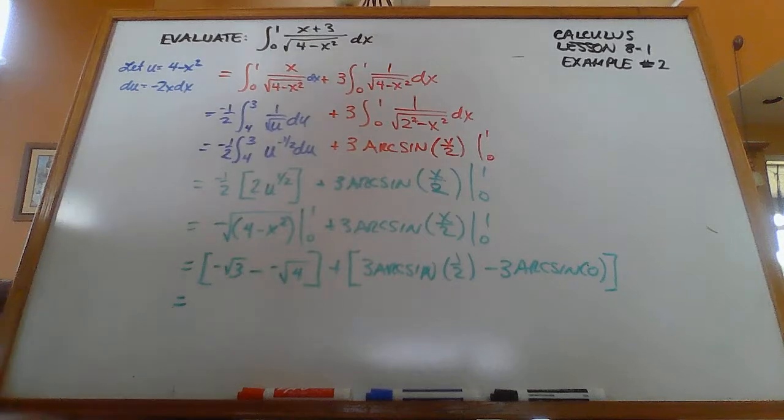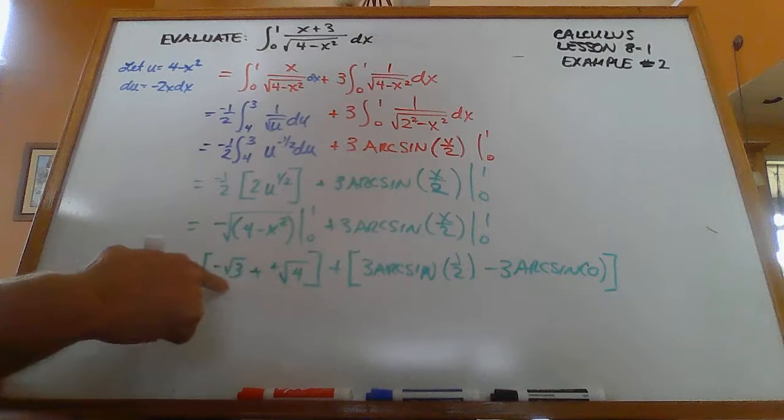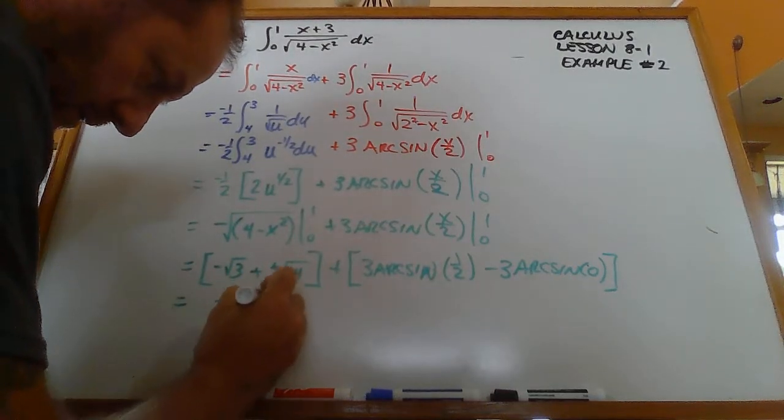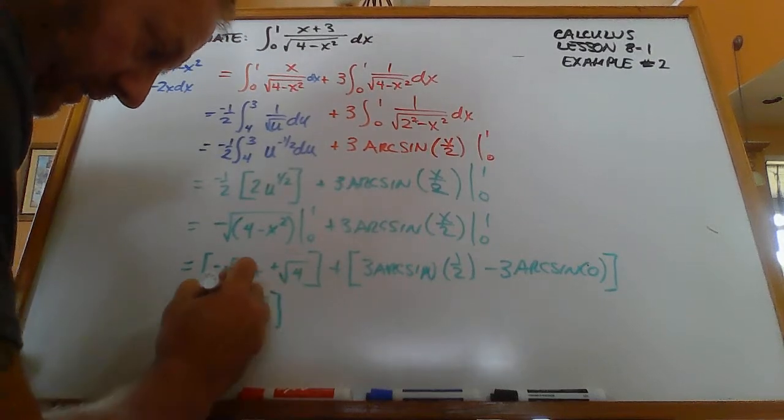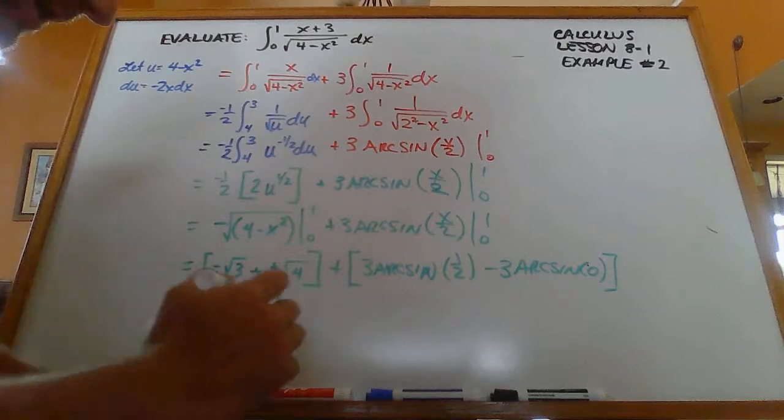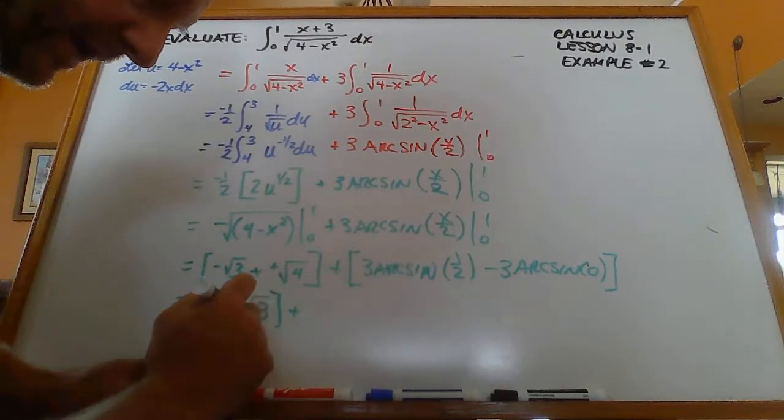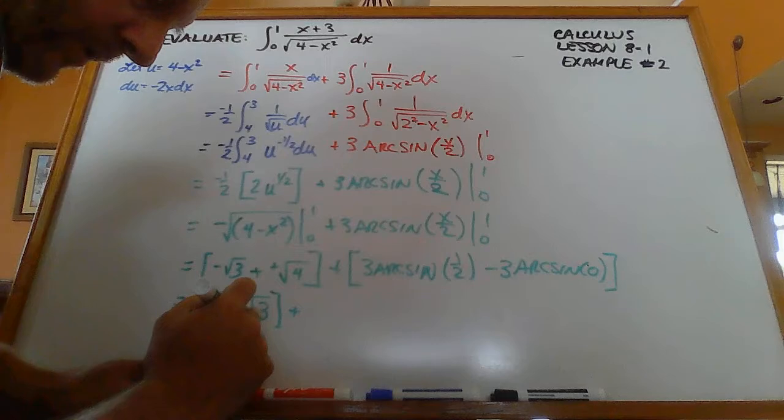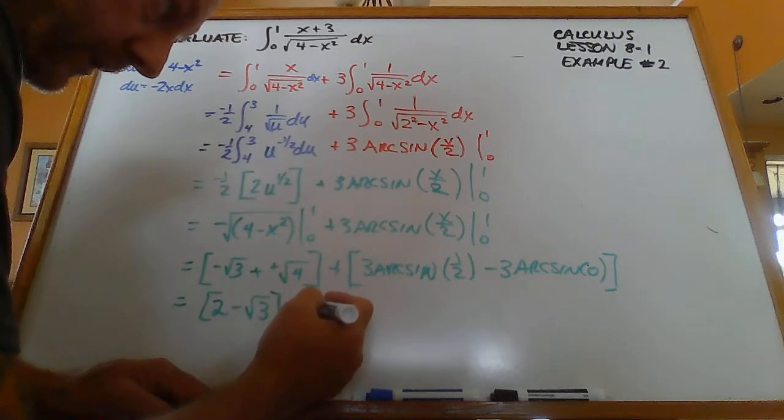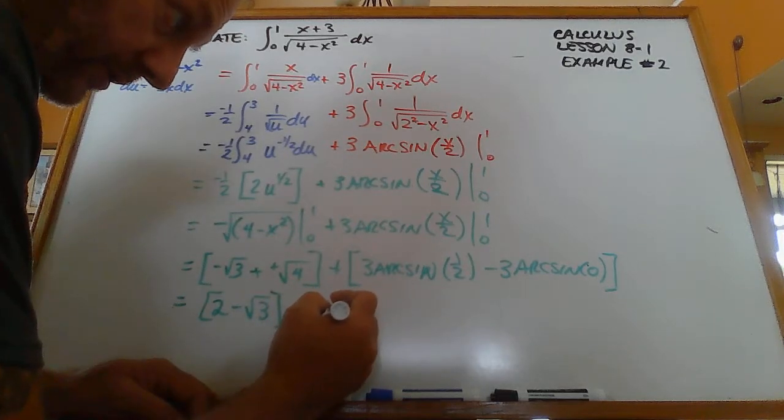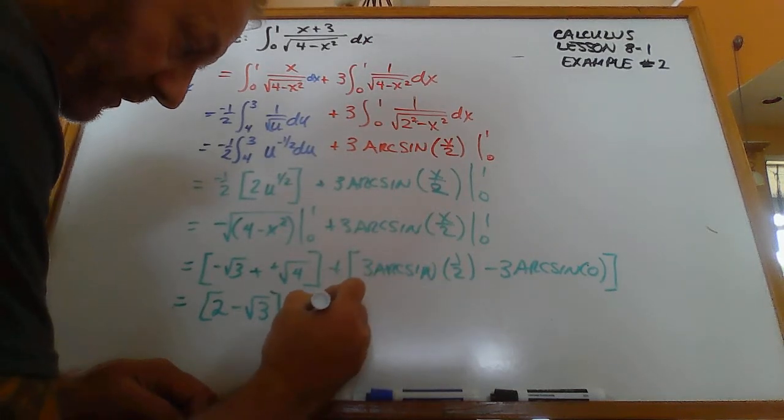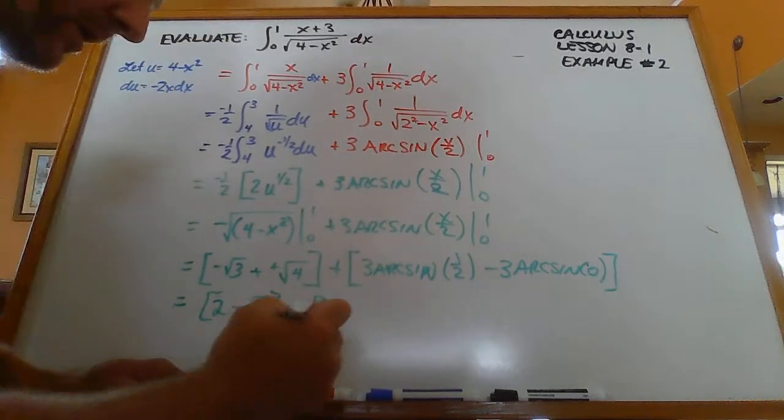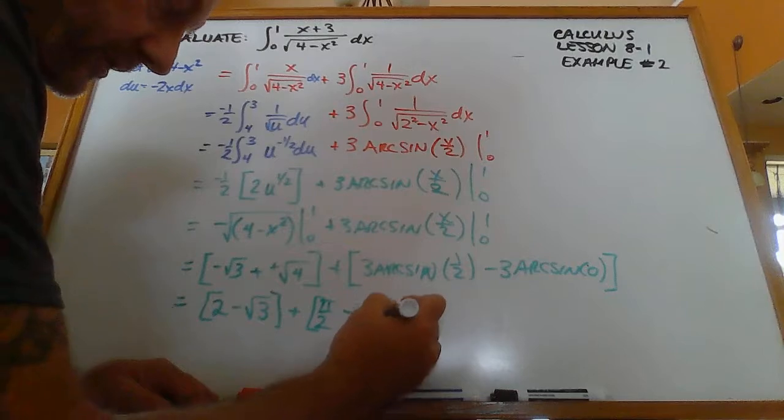So this ends up being plus and plus. That's 2 minus the square root of 3. And that's plus the arc sine of 1 half is pi over 6. So 3 times pi over 6 is going to be pi over 2. The arc sine of 0 is 0, so this ends up being 0.